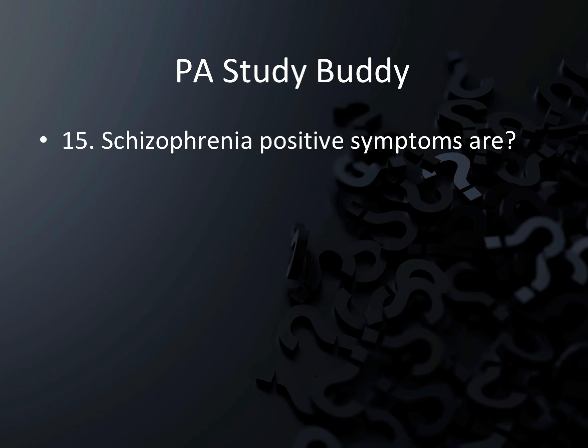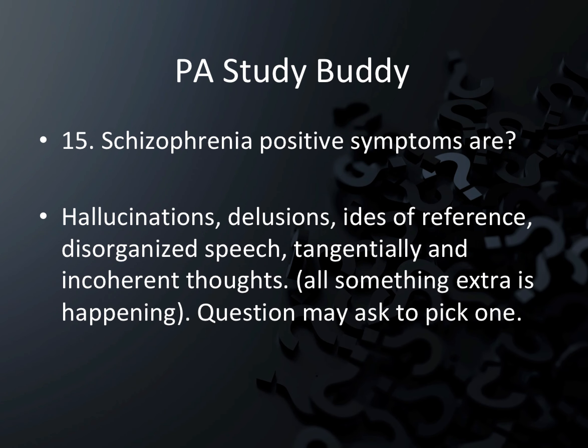In contrast, positive symptoms of schizophrenia are something extra happening: hallucinations, delusions, ideas of reference, disorganized speech, catatonia, and incoherent thoughts — all something extra. The question will ask you to pick one; they could give you three positive and one negative or vice versa. Knowing that something extra happening is positive, and lack of emotion symptoms are negative, will help you select correctly.